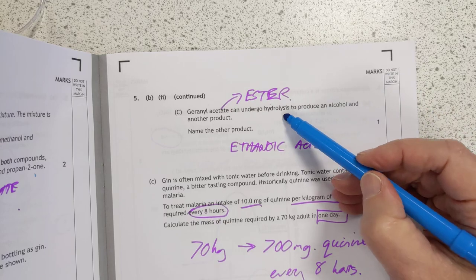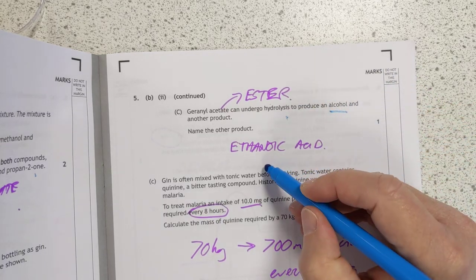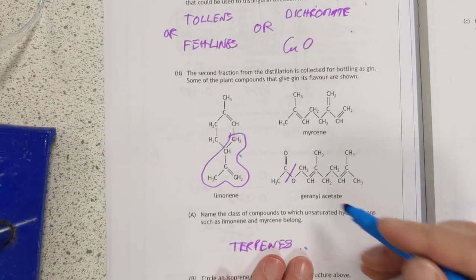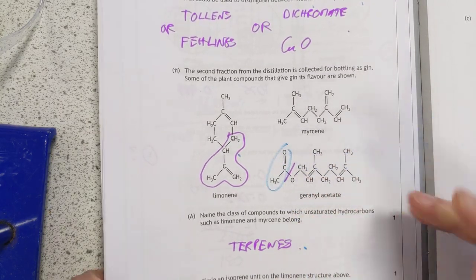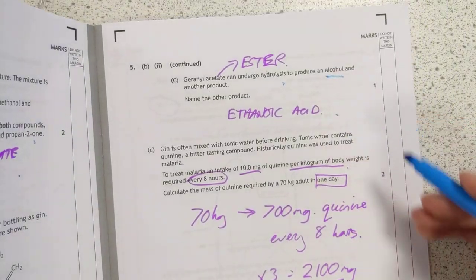Linalyl acetate is an ester and it can be hydrolyzed. It will produce an alcohol and a carboxylic acid. Look back at the structure here. You can see where I've snapped the ester. And that is going to be your carboxylic acid. Two carbons. Ethanoic acid.